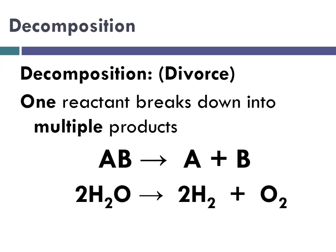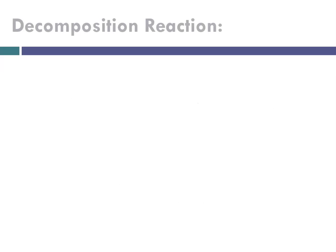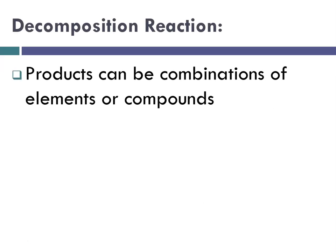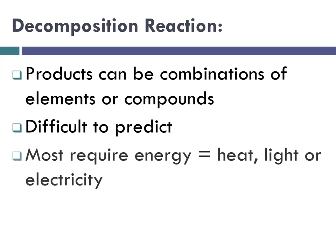With decomposition, the products can be combinations of elements or compounds, and they can be difficult to predict. Most decomposition reactions require energy in the form of heat, light, or electricity in order to take place. We'll talk about each of these reactions in other videos, including how to predict products once we've learned how to classify reactions.